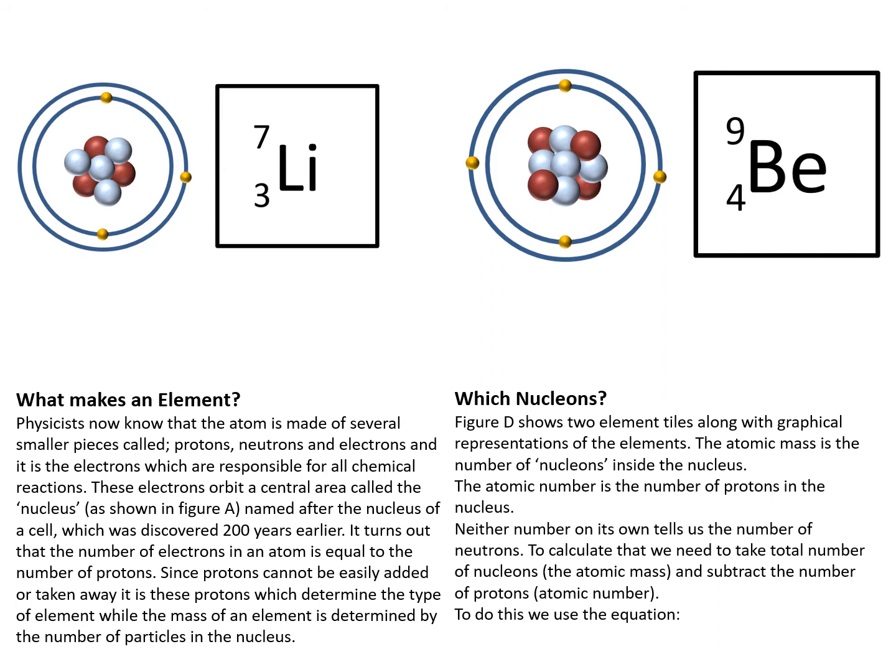So what makes an element? Physicists know that the atom is made of several smaller pieces called protons, neutrons and electrons. And it is the electrons that are responsible for all chemical reactions. So these electrons orbit a central area called the nucleus, named after the nucleus of the cell which had been discovered 200 years earlier. It turns out that the number of electrons in an atom is equal to the number of protons. Since protons cannot be easily added or taken away, it is these protons which determine the type of element, while the mass of an element is determined by the number of particles inside the nucleus.